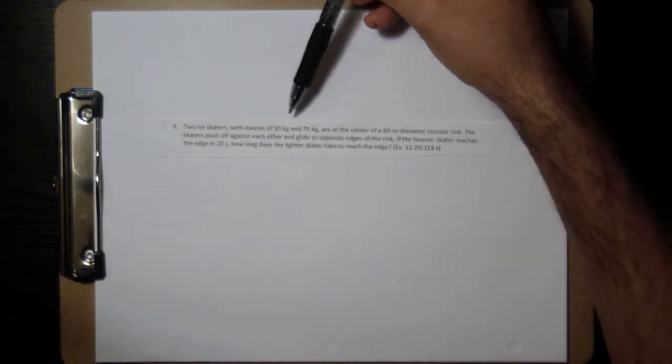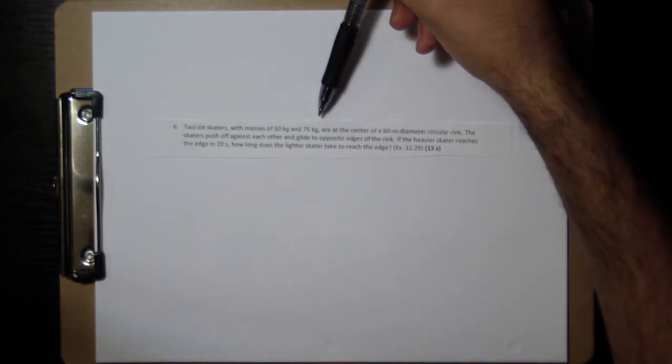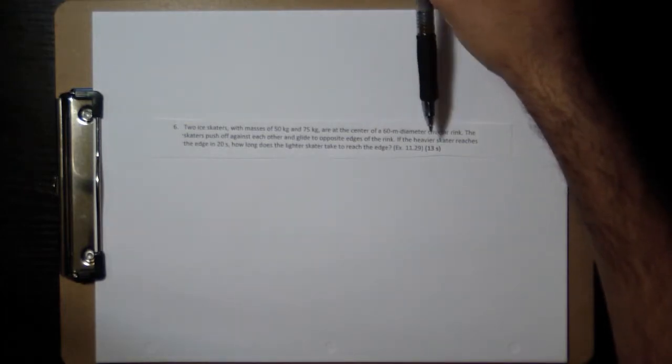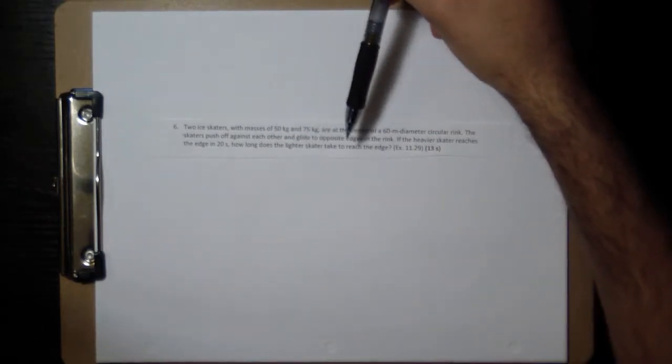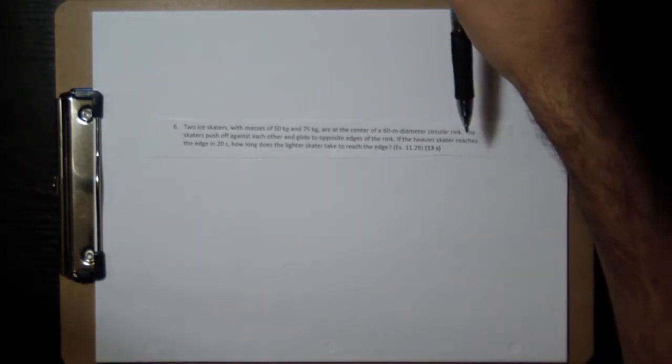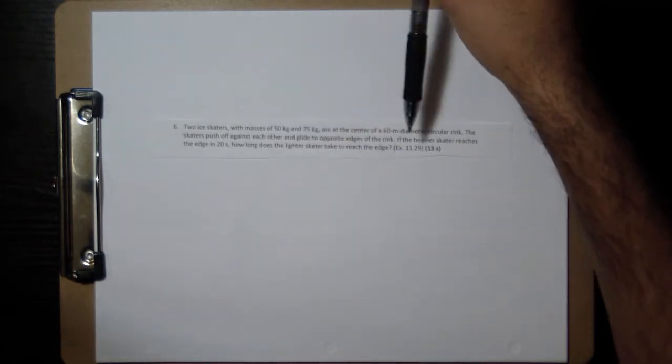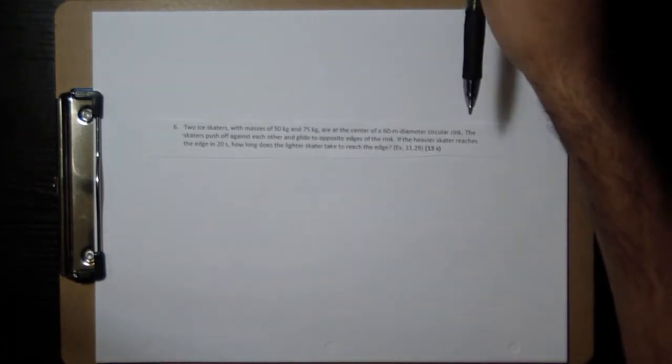Alright, let's look at problem number six. Two ice skaters with masses of 50 kilograms and 75 kilograms are at the center of a 60 meter diameter circular rink. The skaters push off against each other and glide to opposite edges of the rink. If the heavier skater reaches the edge in 20 seconds, how long does the lighter skater take to reach the edge?